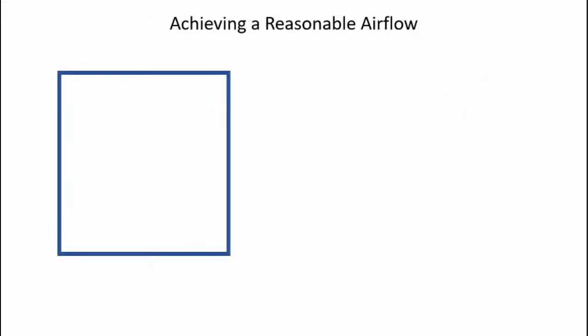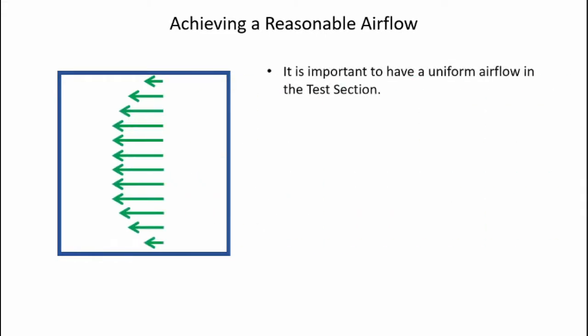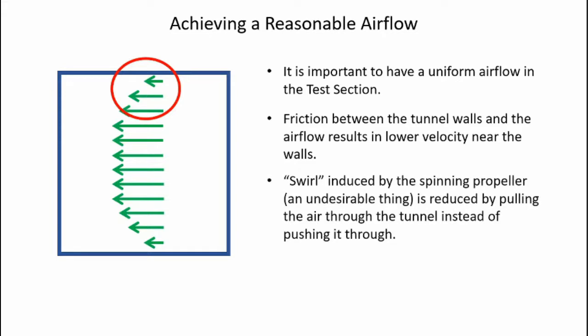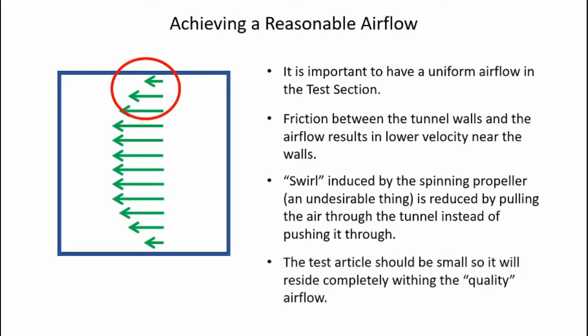The trick to having a reasonable wind tunnel is to create a uniform airflow inside the test section. Unfortunately, there's going to be friction between the wind tunnel walls on the top, the bottom, the front, and the back that slow down the flow towards the walls. There's also a swirl introduced by the spinning propeller, and that's undesirable. I pull the air through the wind tunnel to try to reduce any swirl induced by the propeller system itself. And finally, the test article should be small so it will reside completely within the quality airflow.